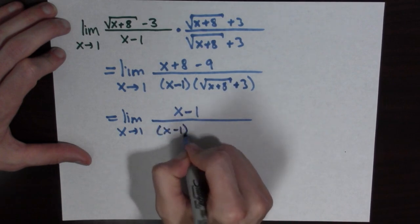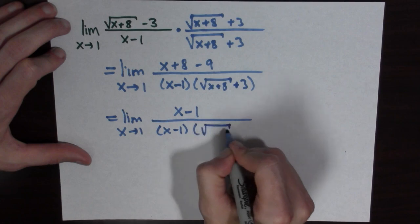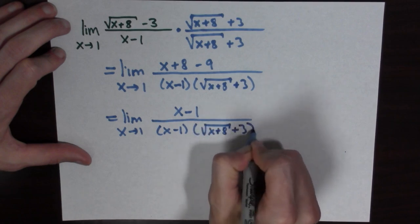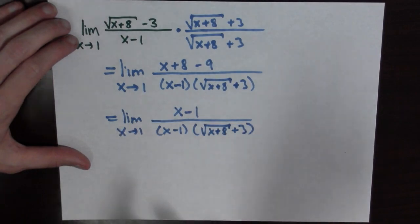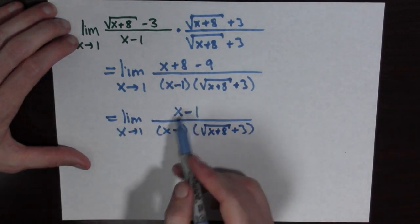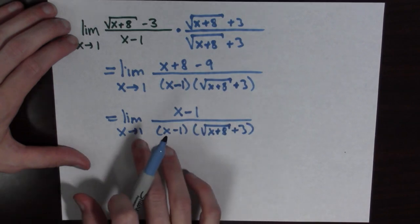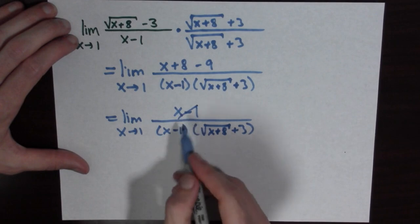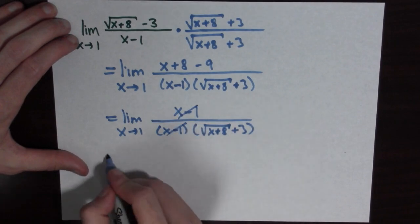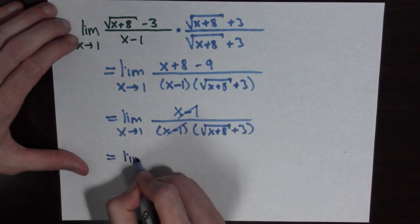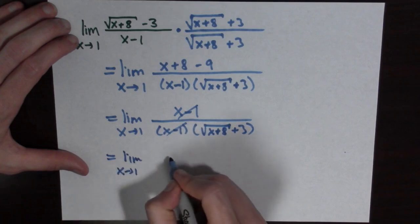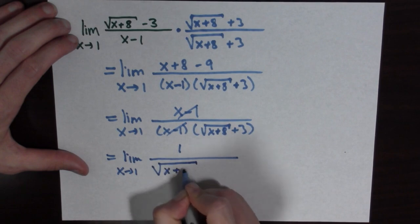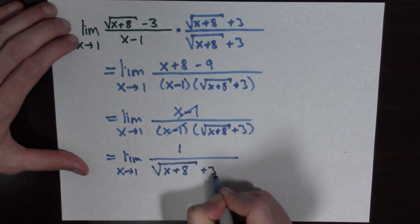So now we have x minus 1 over x minus 1 times the square root of x plus 8 plus 3. Since we're taking the limit we may cancel these terms, because we're assuming x is not equal to 1. We cancel, giving the limit as x goes to 1 of 1 over the square root of x plus 8 plus 3.